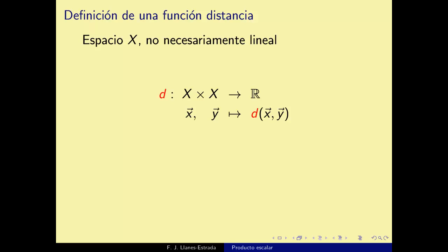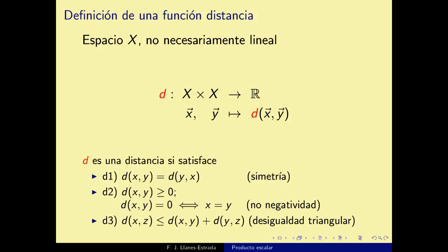Tomamos dos puntos X e Y en el espacio y D(X,Y) es simplemente la distancia entre ellos. D es una distancia si satisface: primero, simetría: D(X,Y) = D(Y,X); segundo, positividad semidefinida: D(X,Y) ≥ 0 y D(X,Y)=0 si y solo si X=Y; tercero, la desigualdad triangular: D(X,Z) ≤ D(X,Y) + D(Y,Z). Memorícenla, aparecerá mil veces.